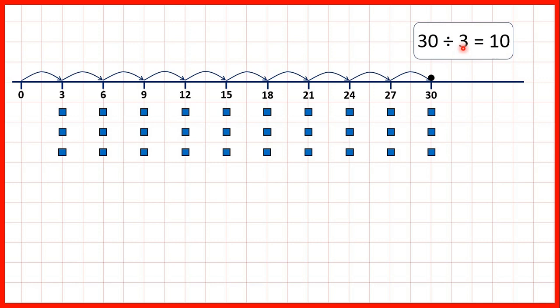Thirty divided by three is ten. Thirty-three divided by three is eleven. Thirty-six divided by three is twelve.